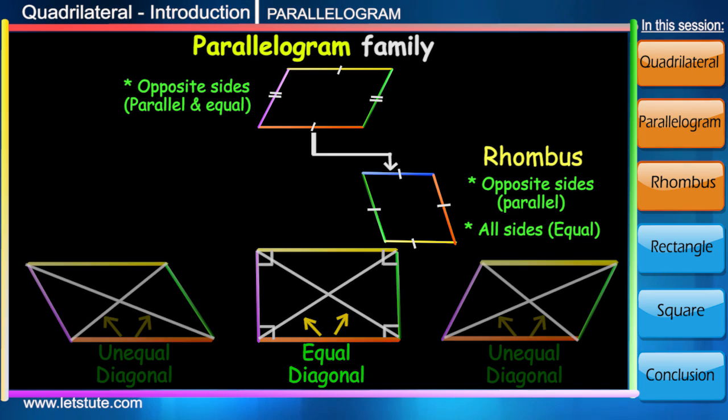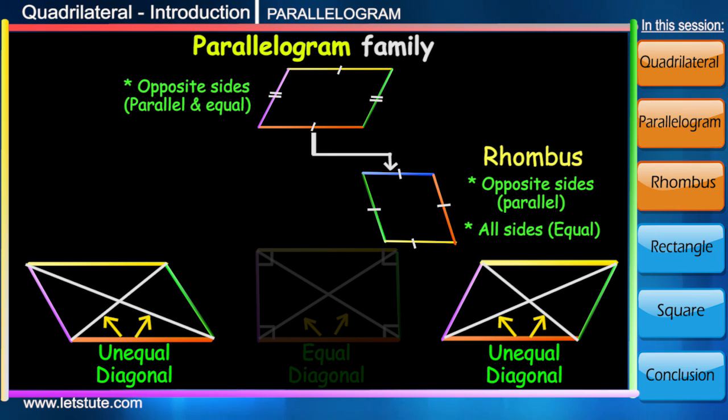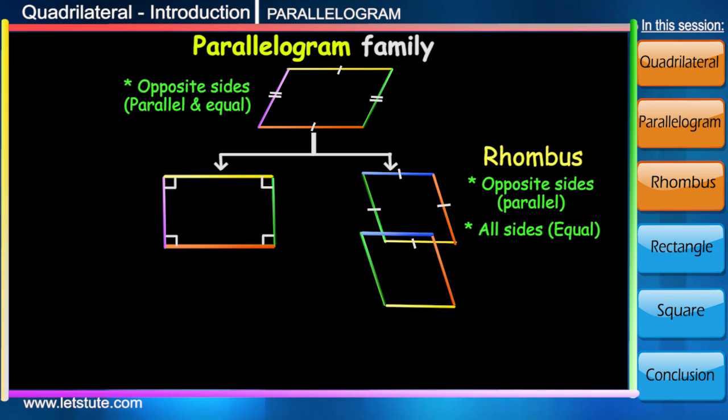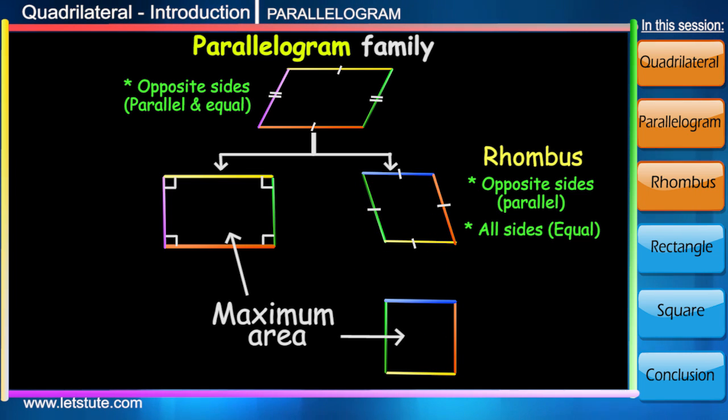The conclusion is a parallelogram or a rhombus occupies maximum area when the angles are of 90 degrees. We will learn more about the areas in our further session. For now, let's move forward.